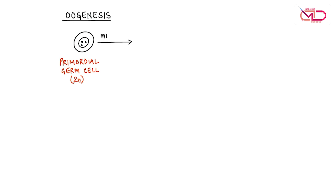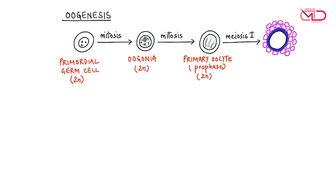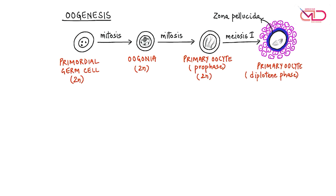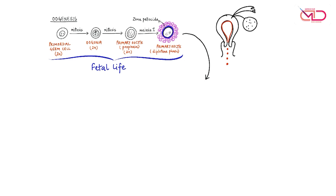Talking about oocyte development: we begin with a number of primordial germ cells which are diploid. They divide multiple times by mitosis to give rise to diploid oogonia, which further divide multiple times by mitosis to form the primary oocyte, which is again diploid. This primary oocyte enters the first meiotic division and gets surrounded by follicular cells, but the process is arrested in the diplotene phase of prophase of the first meiotic division.